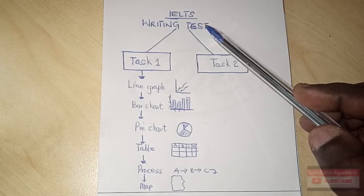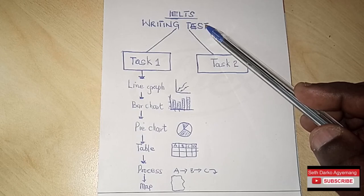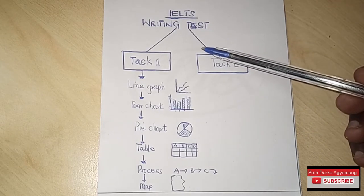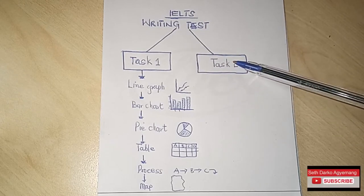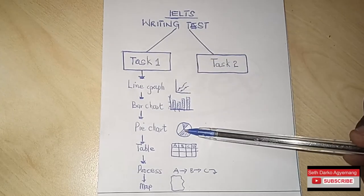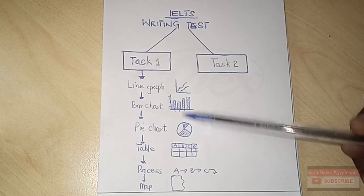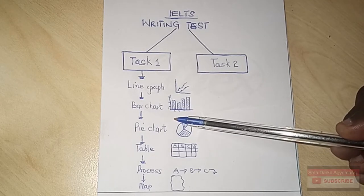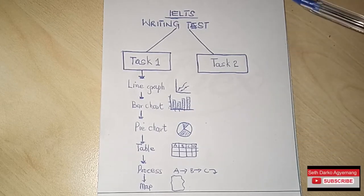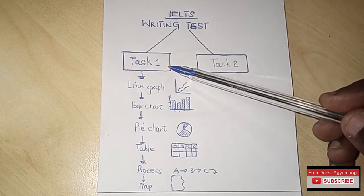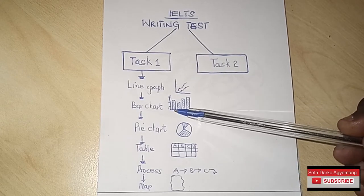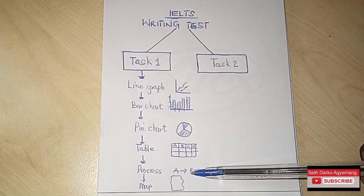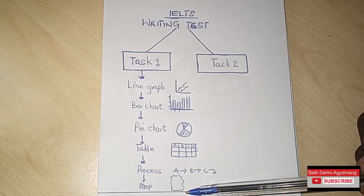The writing test comprises two tasks: Task 1 and Task 2. For the sake of this video I'll be focusing on Task 1 and giving a brief introduction so that you know what to expect the moment you sit for IELTS. In Task 1, you'll be asked to describe diagrams. That may include a line graph, a bar chart, pie chart, table, processes, and a map — it's as simple as that.